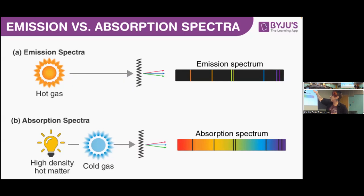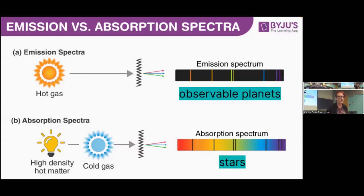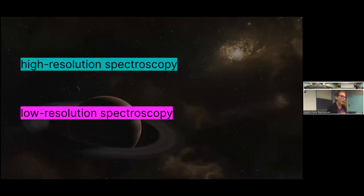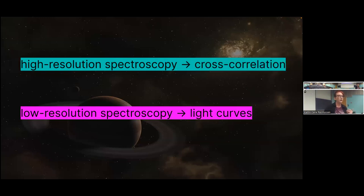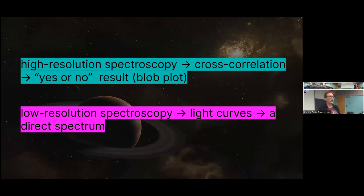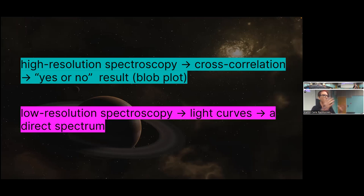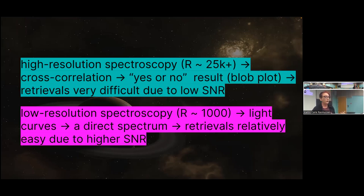Physics 101: hot things emit, cool things absorb. Counter-intuitively, the things that absorb are stars, and the things that emit are largely the planets, which are detectable with current technology. I'm going to talk about both high resolution and low resolution spectroscopy. High res relies on cross-correlation as a method of extracting a planet signal, whereas low resolution relies on light curves. High res gives you a yes-or-no result — something like a six-sigma peak indicating you detected carbon monoxide. Low resolution relies on light curves and gives you a direct spectrum you can retrieve on.